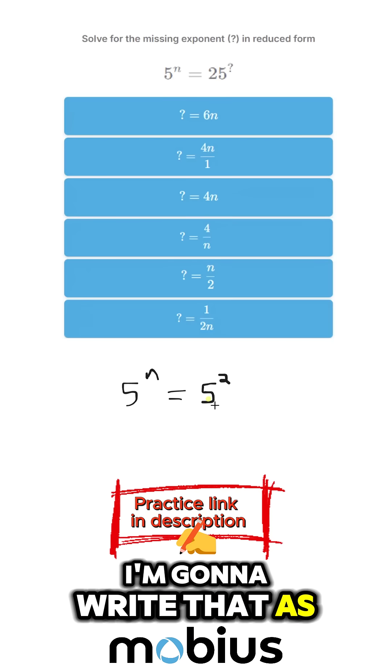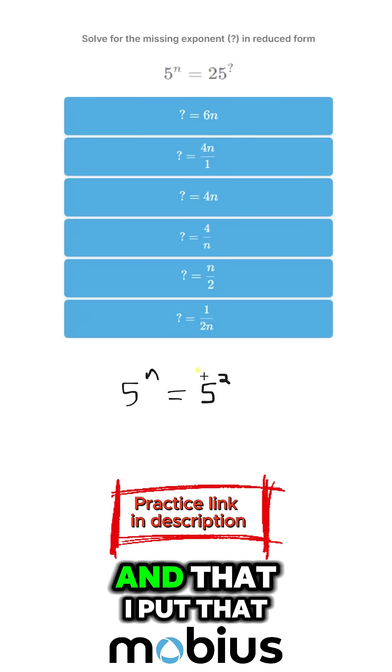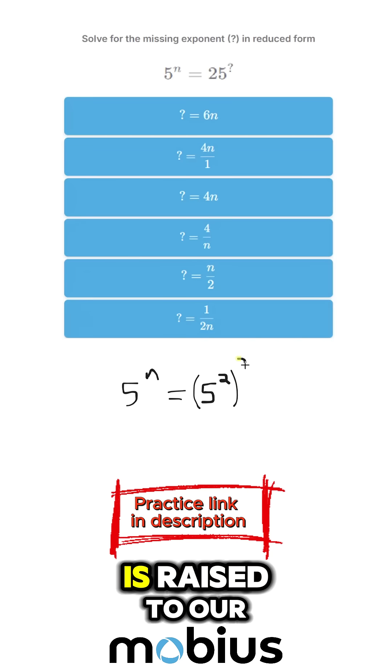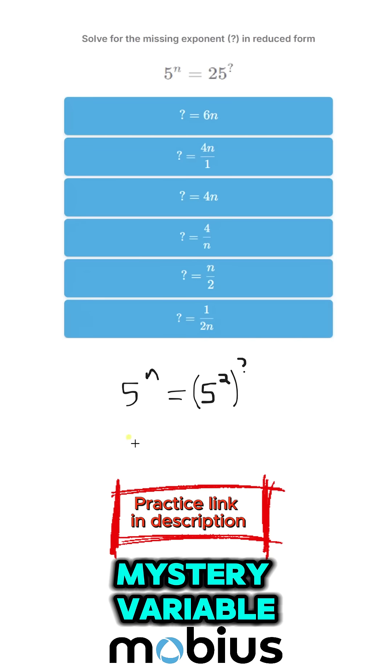I'm going to write that as 5 squared, and that, put that in brackets, is raised to our mystery variable.